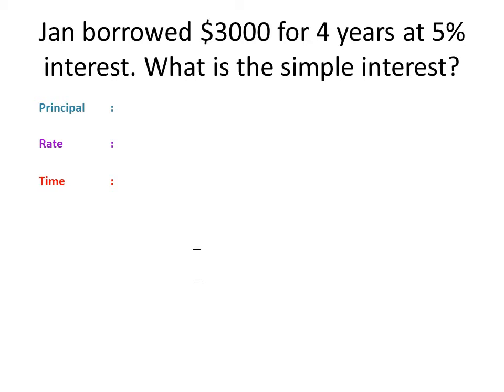John borrowed three thousand dollars for four years at five percent interest. What is the simple interest? Let us first identify the three things we need. The principal is the amount borrowed, so the principal is three thousand dollars. The rate is the percentage interest, so the rate is five percent.